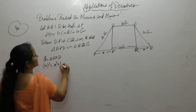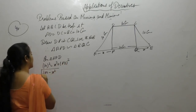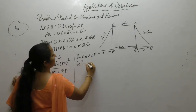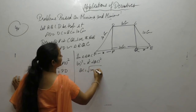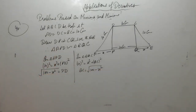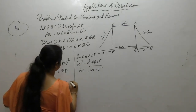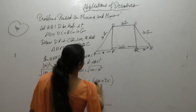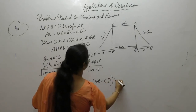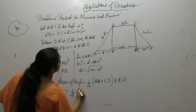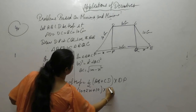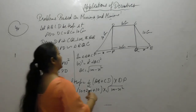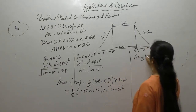In triangle APD: hypotenuse² equals perpendicular² plus base², so PD equals sqrt(100 minus x²). Similarly QC equals sqrt(100 minus x²). Area of trapezium equals half times sum of parallel sides times height: ½ times (AB + CD) times height. AB is 10 plus 2x, CD is 10, and PD equals sqrt(100 minus x²). Taking 2 as common factor: area equals (x + 10) times sqrt(100 minus x²).